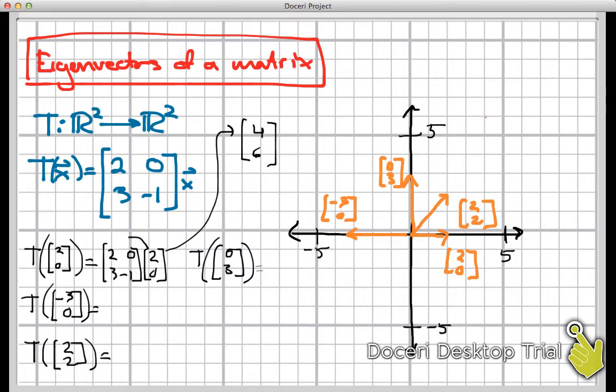So I'm going to go ahead and erase this now because I need to have some more room for the other vectors that are coming up. And let's do T of (-3,0). So that would be, again, I would take [2, 0, 3, -1] and multiply by (-3,0). And I've got enough room down here to write the result here. That's going to be a (-6,-9).